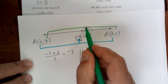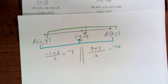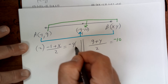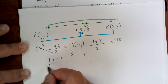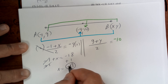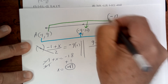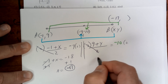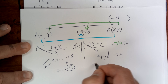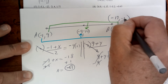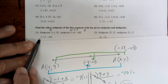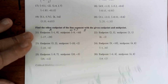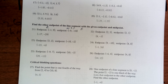That equals your y midpoint, which is negative 10. Any questions? You're dividing by 2, so multiply both sides by 2: you get negative 1 plus x equals negative 18. Add 1 and x equals negative 17. For the y, multiply by 2: 9 plus y equals negative 20. Subtract 9 and you get negative 29. So the answer is point B at (negative 17, negative 29), and that's correct.